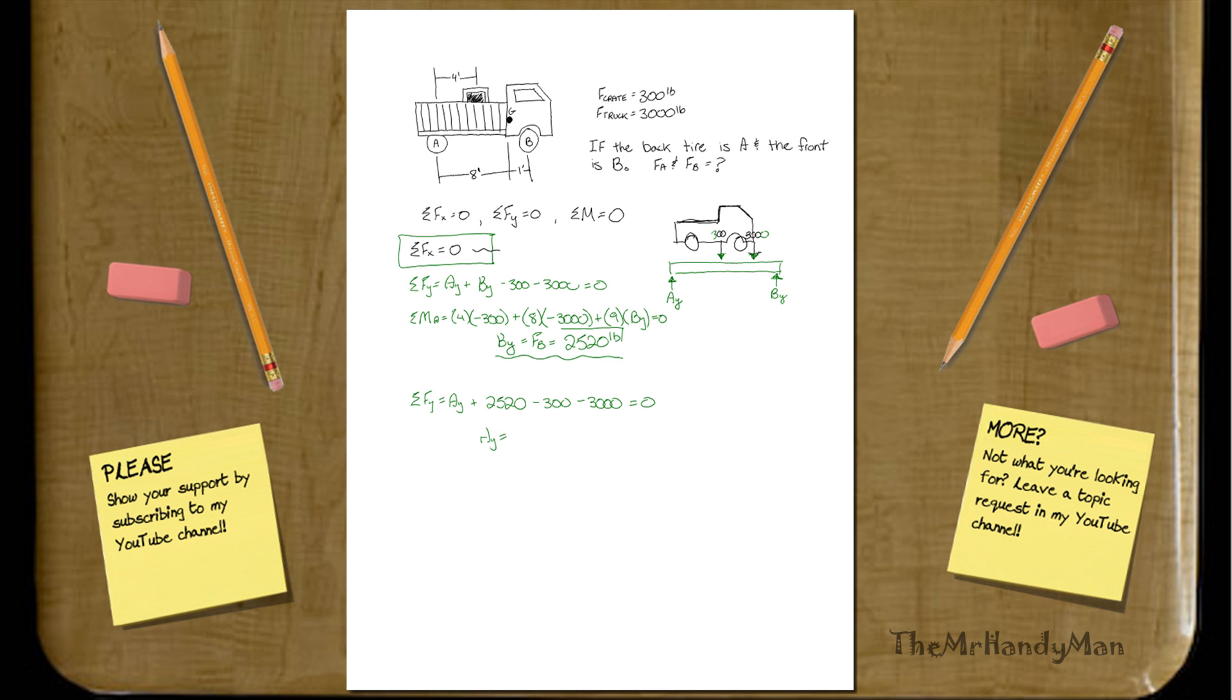And then when you work that out, you have your FA, essentially, which is going to be 780 pounds.